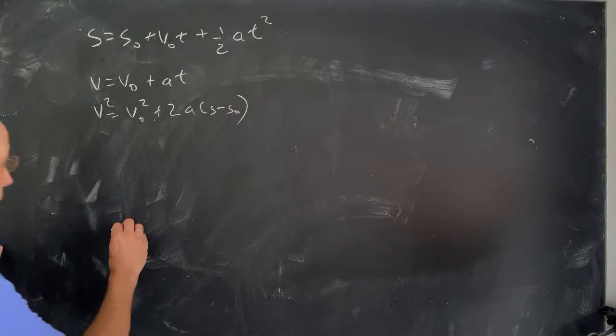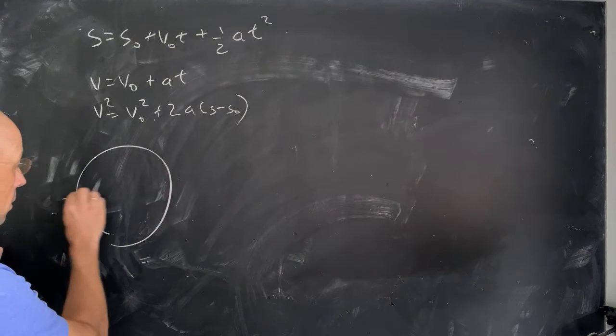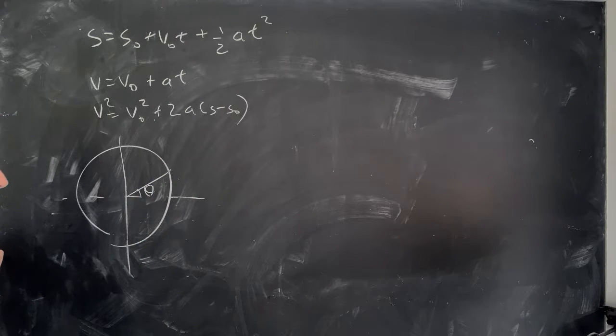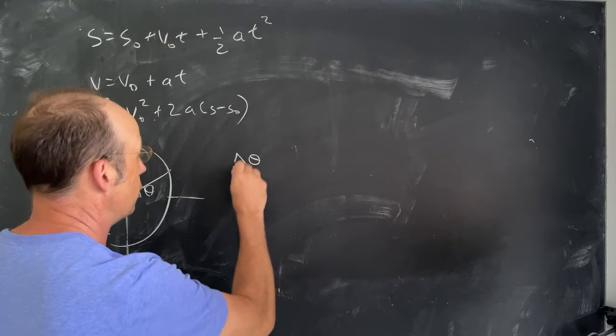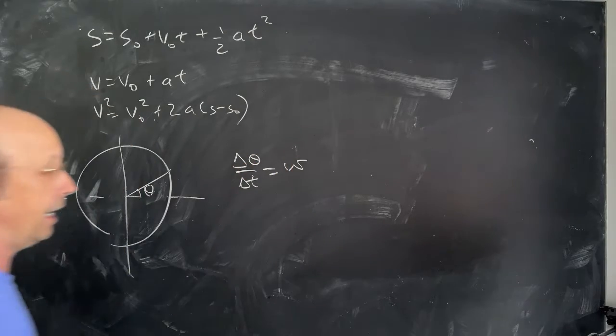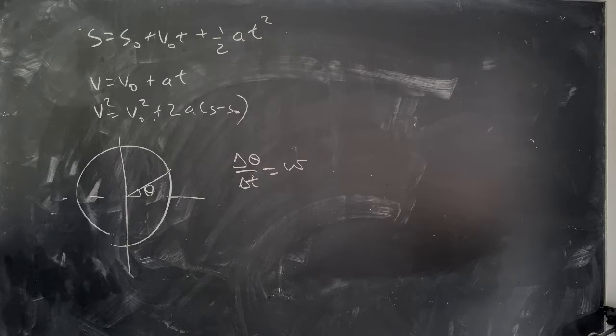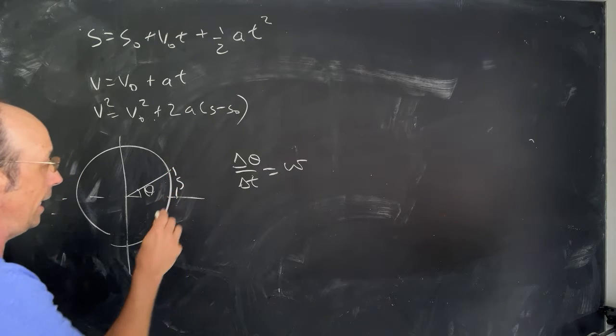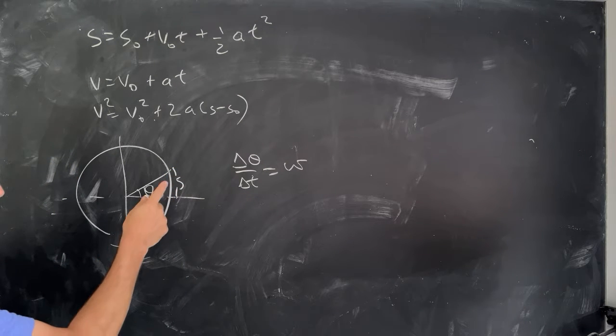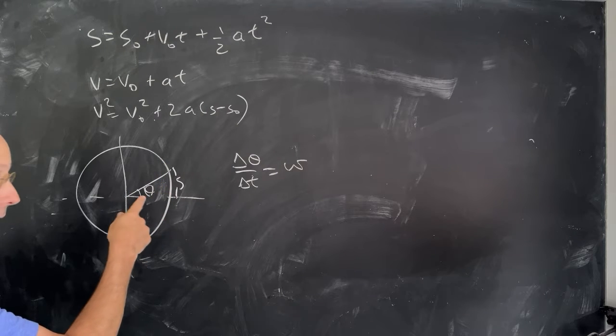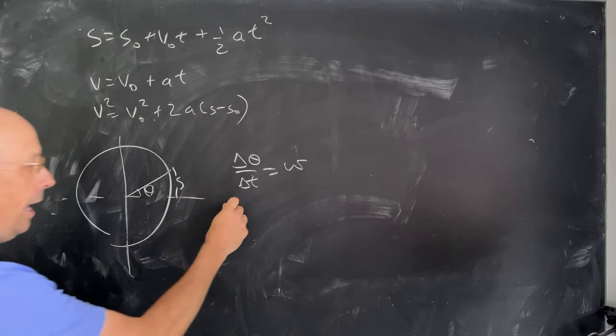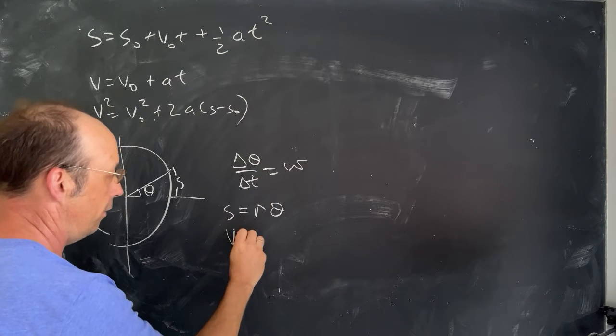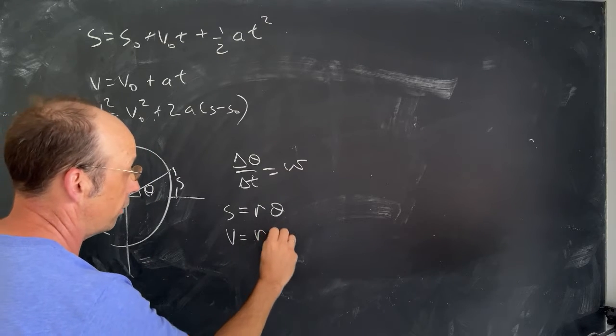So if we look at rotational motion, we can describe the position of an object with the angle theta. And if we look at the rate of change of theta with respect to time, we call that the angular velocity, omega. And remember, we've already done this. If I want to relate that to distance S, the arc length, you can see that the arc length S = Rθ. Well, the same thing is true for angular velocity. V, the speed along the arc length, is R times omega.